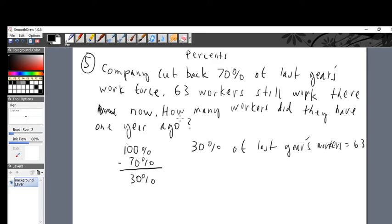What do we want to know? What are we looking for? How many workers did they have one year ago? That's going to be our x. Now 30%, change it into decimal before we can move anywhere. Move it over two places to the left, we have 0.30, also known as 0.3.